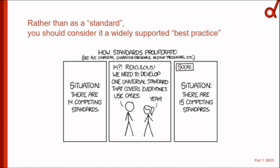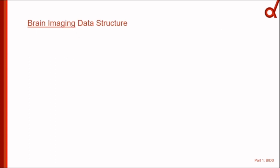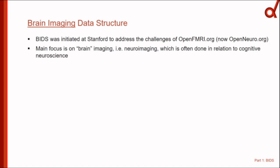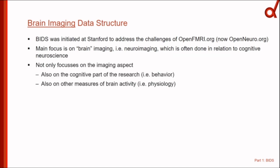This makes BIDS a bit more flexible in your cognitive mindset — there's no very strict BIDS rules, no BIDS police. There is a BIDS validator, which I'll come to. BIDS is about brain imaging. It was initiated at Stanford University by the group of Russ Poldrack to address challenges they faced with openfmri.org, which has now migrated into openneuro.org. The main focus is neuroimaging, which often relates to cognitive experiments, so BIDS focuses not only on imaging aspects but also on cognitive research questions, behavior, and experimental manipulations — as well as other measures of brain activity like physiology.